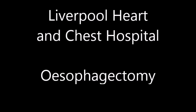What does the operation involve? The operation is performed under a general anaesthetic, so you will be asleep during the procedure. The procedure involves freeing up and reshaping the stomach to allow it to be pulled up into the chest, removing the cancer and parts of the oesophagus, removing the surrounding tissue and lymph nodes that may have cancer in them, and joining the stomach to the upper part of the oesophagus. Sometimes it may be necessary to insert a temporary feeding tube into the stomach.